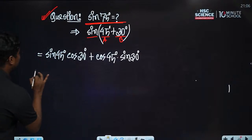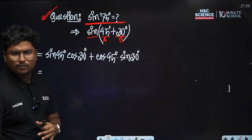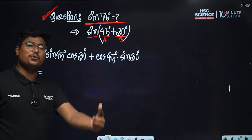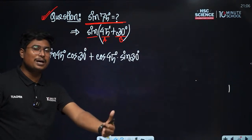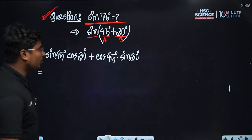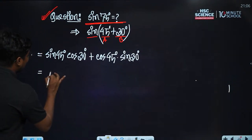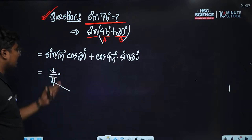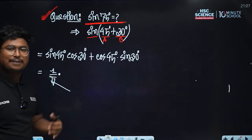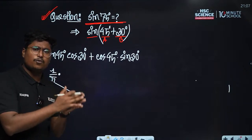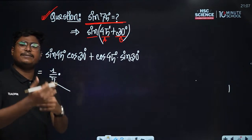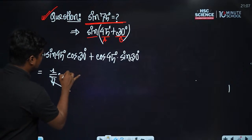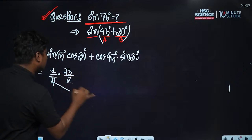We need to solve: sin 45° equals 1 divided by root 2. And cos 30° equals root 3 divided by 2. Then cos 45° equals 1 divided by root 2.